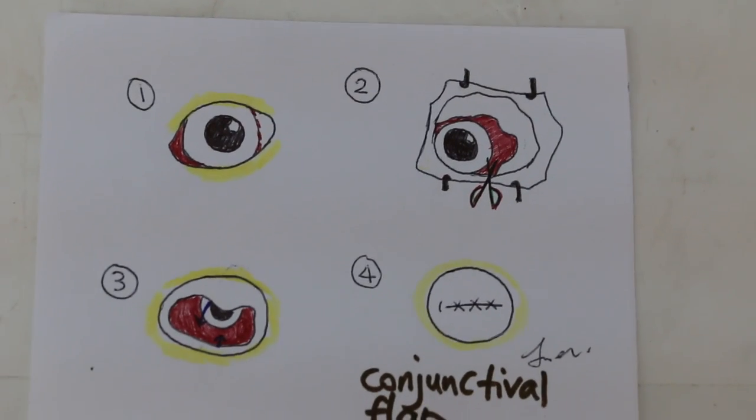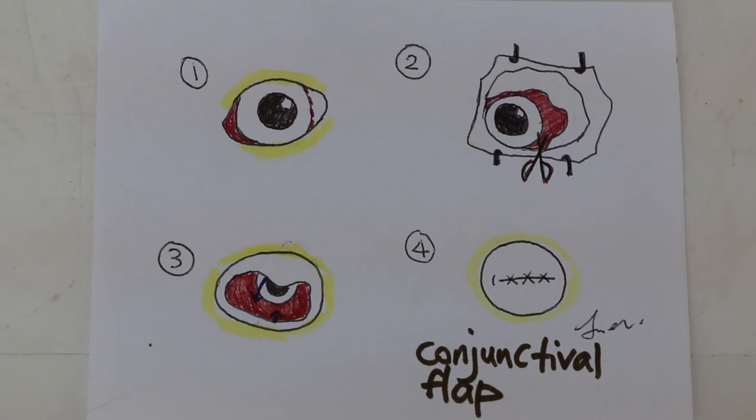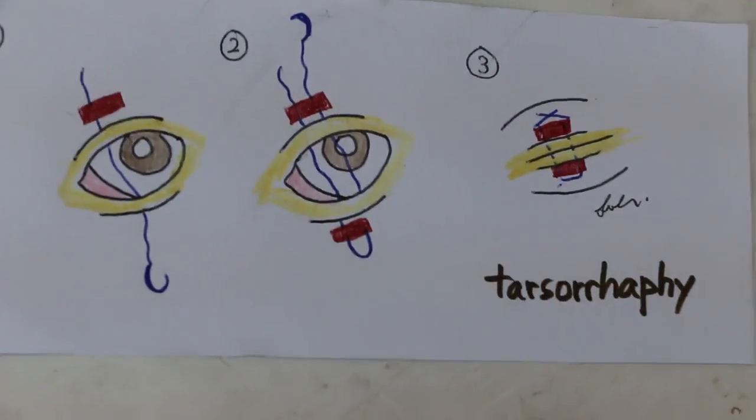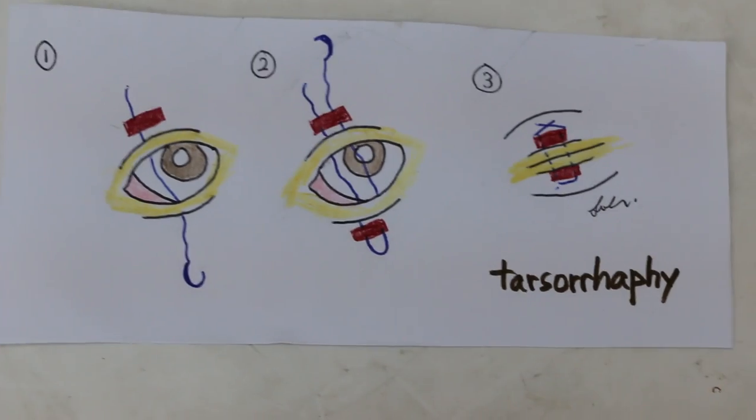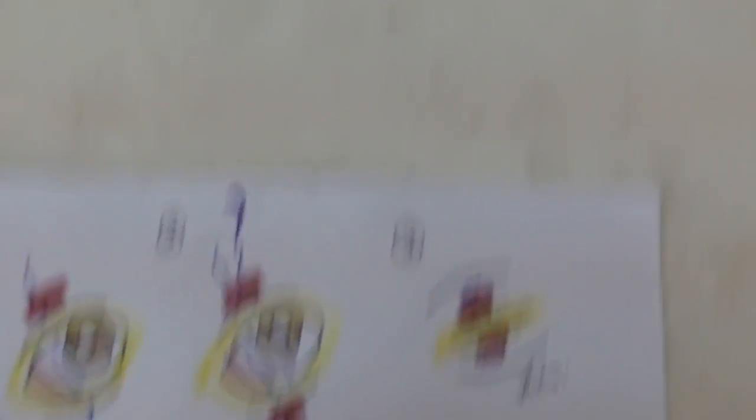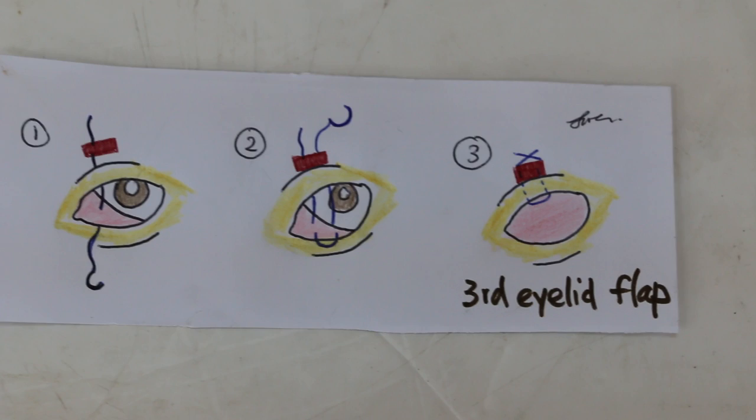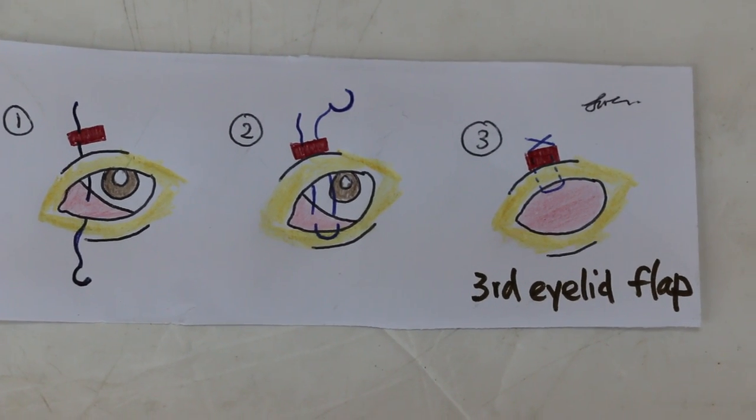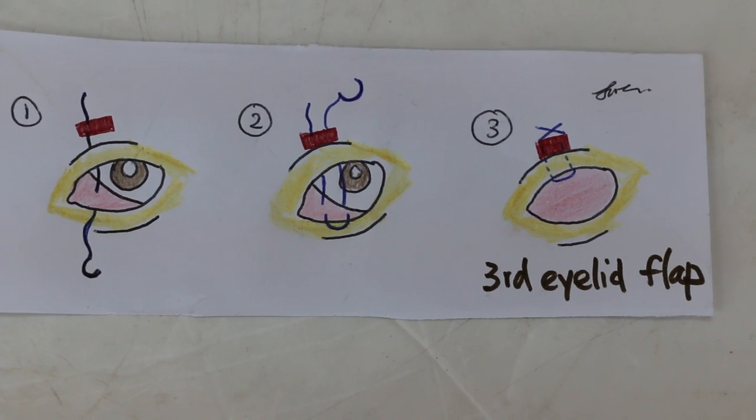It depends on the dog and the skill of the veteran surgeon. So normally I do tarsorrhaphy, which is a simple one. If the ulcer is not very extensive, but it's deep, then the other one, third eyelid flap, is a bit more difficult because of the tension. There's a lot of tension on the third eyelid.